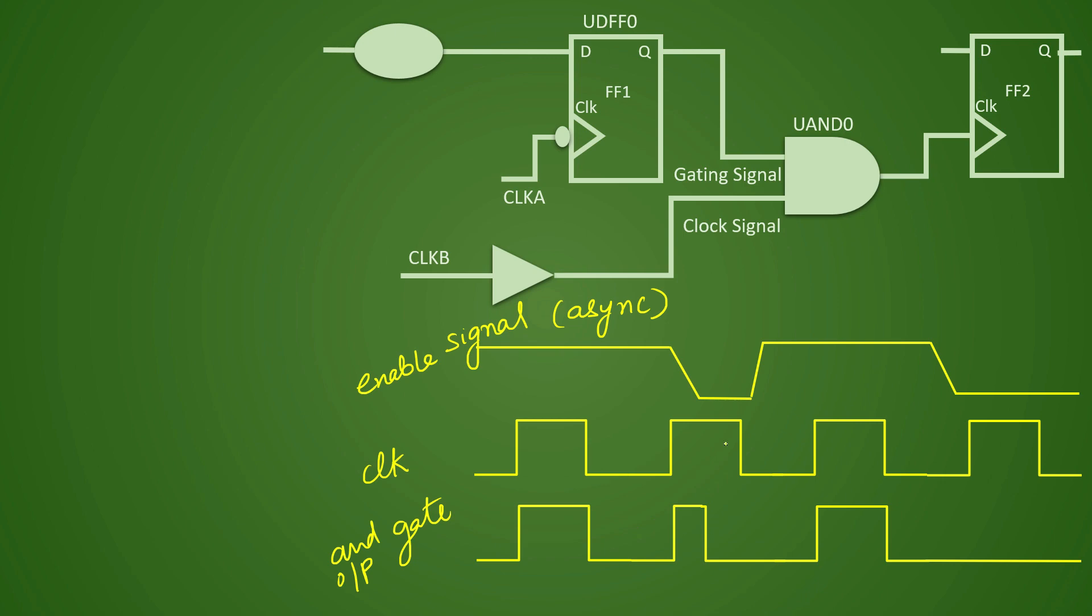This output is coming from these two signals. If you see whenever you are getting enabled signal here, this is coming when clock is inactive. At that time there is no problem. Whenever the change is happening during inactive period of clock.